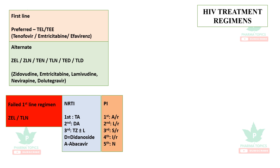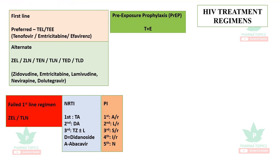Second-line options include tenofovir with atazanavir, or dolutegravir with atazanavir. If those fail, tenofovir plus zidovudine or lamivudine is used. Didanosine is abbreviated 'd' and abacavir is 'a.' The protease inhibitors can be remembered as 'ASIN': atazanavir, saquinavir, indinavir, and nelfinavir. Lopinavir is remembered as 'L.' All these combinations are given along with ritonavir (noted as /r).